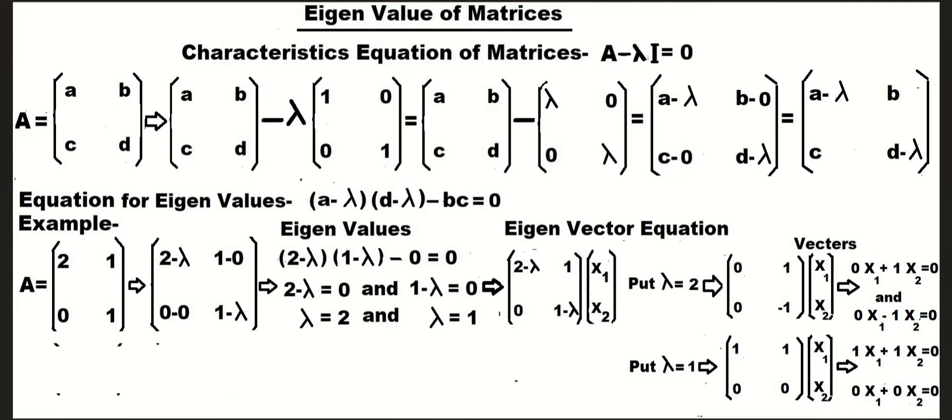You have one numerical example here. For matrix A with elements 2, 1, and 0, 1 - two rows, two columns.